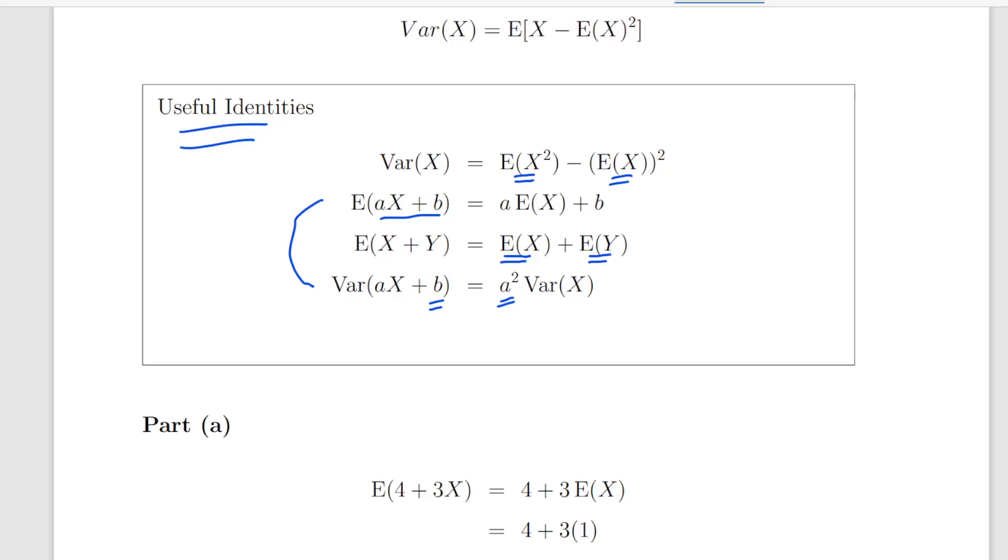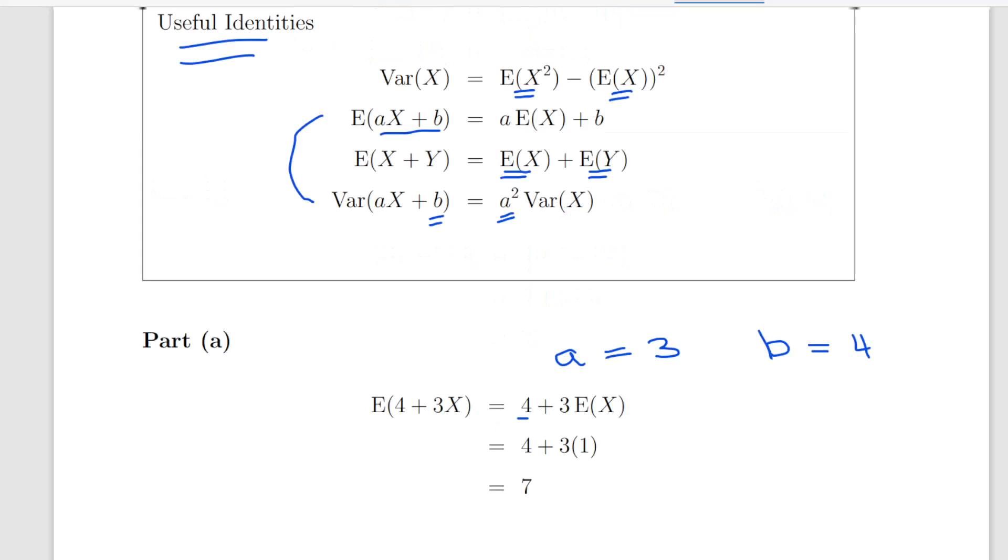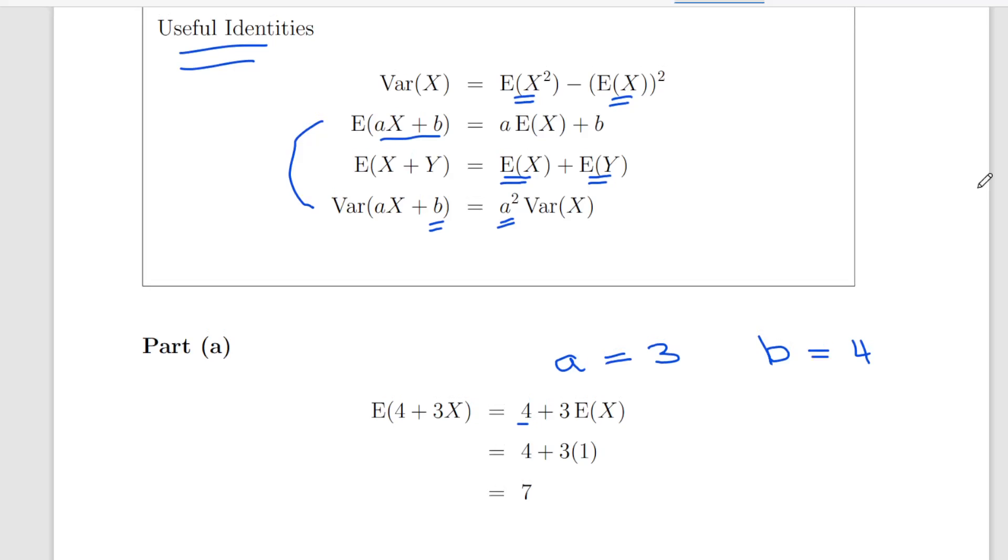The first one: calculate the expected value of 4 plus 3X. Here a is 3 and b is 4. Using the identity, that is equal to 4 plus 3 times the expected value of X, which is 1, so 4 plus 3 times 1, that is 7.